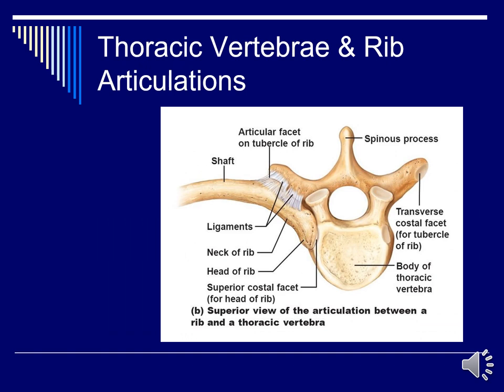Here is the actual articulation between the thoracic vertebra and the rib. The costovertebral joint is formed from the head of the rib articulating with the facets or demifacets on the thoracic vertebra. The costotransverse joint is the articulation of the tubercle on the rib with the transverse process on the thoracic vertebra. This diagram shows how that articulation occurs.